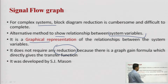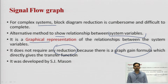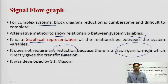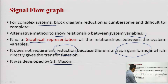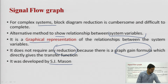Signal flow graph contains the gain formula, and with the help of this gain formula we will calculate the transfer function. Transfer function will come automatically via this gain formula — it means we do not have to apply any reduction rule in signal flow graph. Signal flow graph is a better step compared to block diagram to obtain the transfer function, and it is developed by S.J. Mason. That is why this is also known as Mason gain formula. With the help of Mason gain formula we can calculate the gain or transfer function of the system.